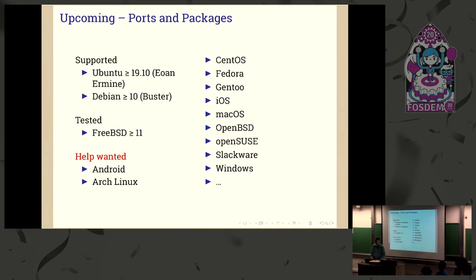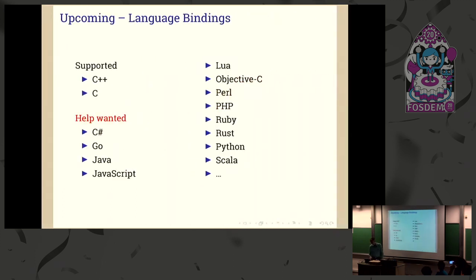At the moment we support Ubuntu 19.10 and Debian 10, and there is a build for FreeBSD. We'd like to build for other platforms too — if you have interest, please contact us. At the moment we have C++ and C bindings via the API, but we'd like to have language bindings for Python, Java, Ruby, and so on. Some people told me there are excellent ways of generating language bindings — just point us in the right direction and we will do the work.